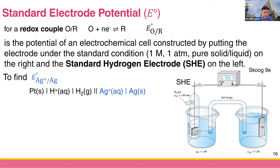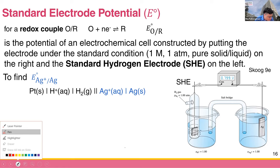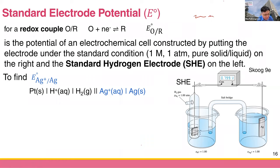In electrochemistry, we use quantities called standard electrode potential to tell the potential of a species or that half-cell to be reduced. We usually communicate the standard electrode potential of the redox couple — can everyone see this color? No one has a problem?